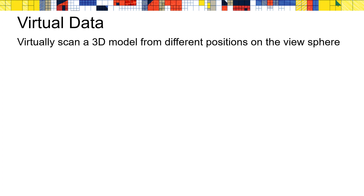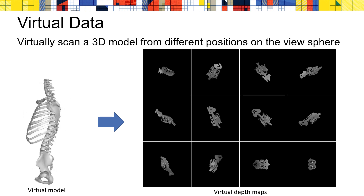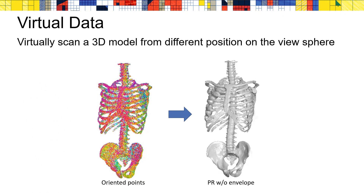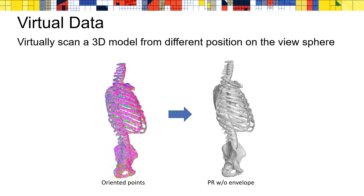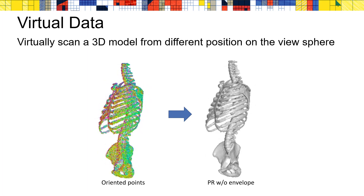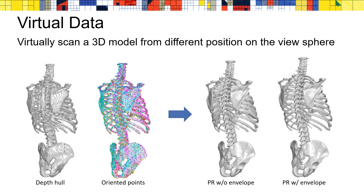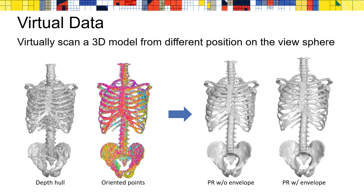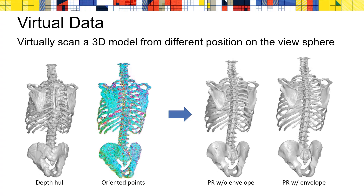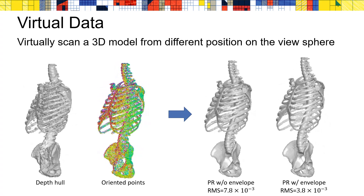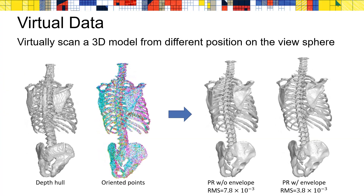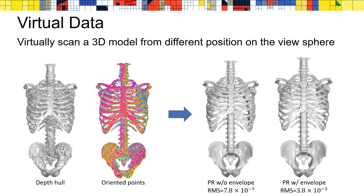Now let's take a look at some results. We begin by considering idealized data where we virtually scan known geometry from different positions on the view sphere. For example, we scan the skeletal torso from 12 different positions, obtaining 12 different depth maps. As the skeleton's torso has high depth complexity, there are many points on the surface not seen from any of the 12 virtual cameras. As a result, standard Poisson reconstruction produces spurious surfaces incorrectly connecting the different ribs. Adding the depth hull extracted from the scans and running our constrained Poisson reconstruction, we obtain an improved reconstruction without spurious surfaces. Using the known ground truth, we find that incorporating the envelope reduces the error by a factor of two.